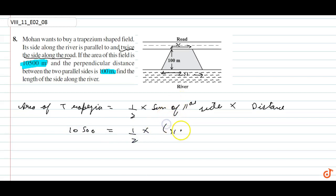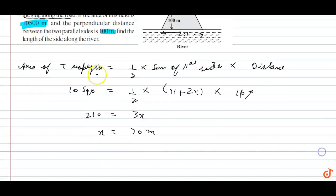Parallel sides x plus 2x into distance is 100 meters. So 210 equals 3x, so x will be 70 meters. So how can we find the length of the side?